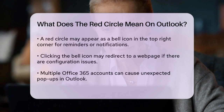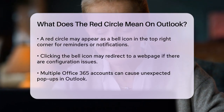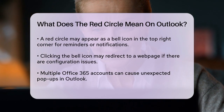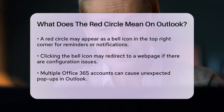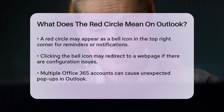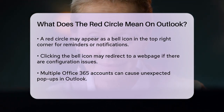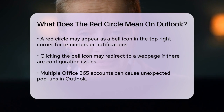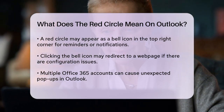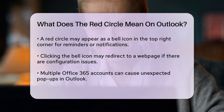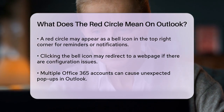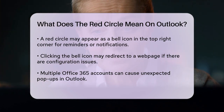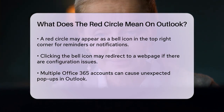You might also encounter a red circle in the form of a bell icon in the top right corner of your Outlook screen. This could be related to reminders or notifications. However, if clicking on it doesn't yield any results and instead opens a web page, it might be due to a specific setting or issue with your Outlook configuration. For example, if you have multiple Office 365 accounts and switch between them, it could cause Outlook to redirect to the Outlook web app, OWA, leading to unexpected pop-ups.